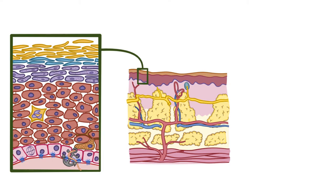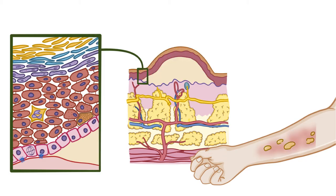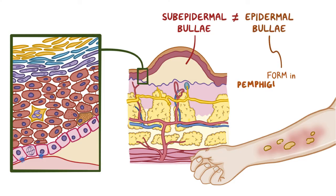So if an anchor breaks and can no longer hold the boat in place, the boat floats away. When the hemidesmosomes are destroyed, the basal cells separate from the basement membrane, and a split forms between the dermis and epidermis, resulting in what's called a subepidermal bullae. These subepidermal bullae are distinct from the epidermal bullae which form in Pemphigus vulgaris, where bullae form as a result of breaking connections between cells within the epidermis.